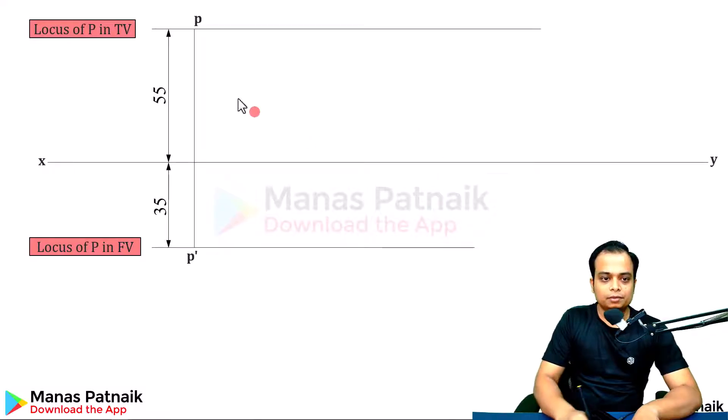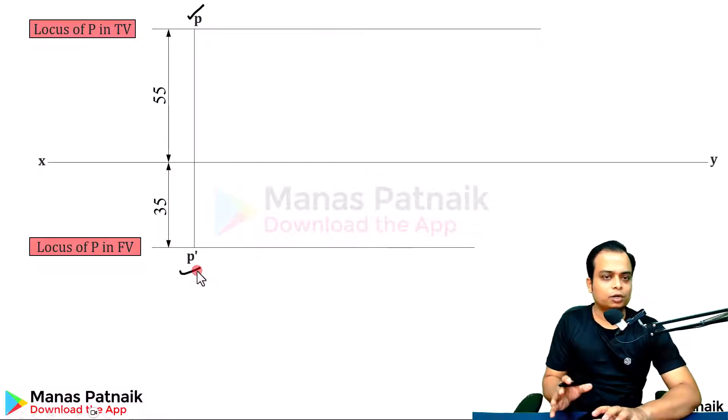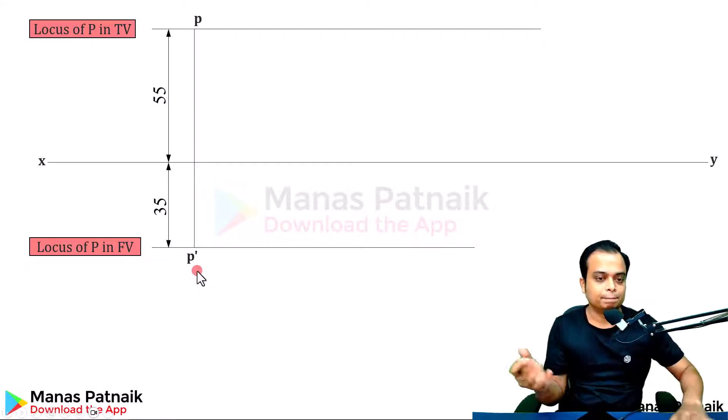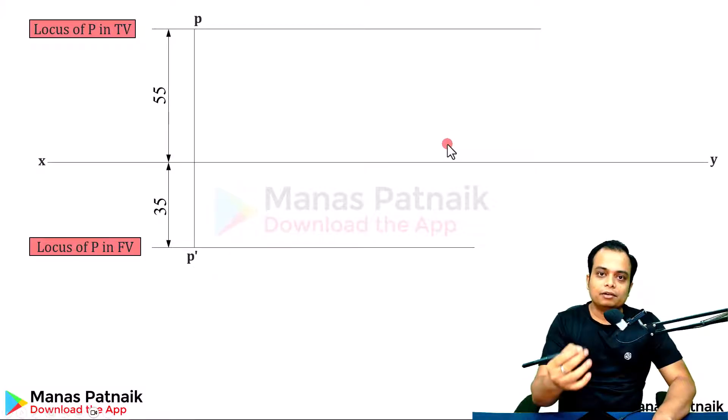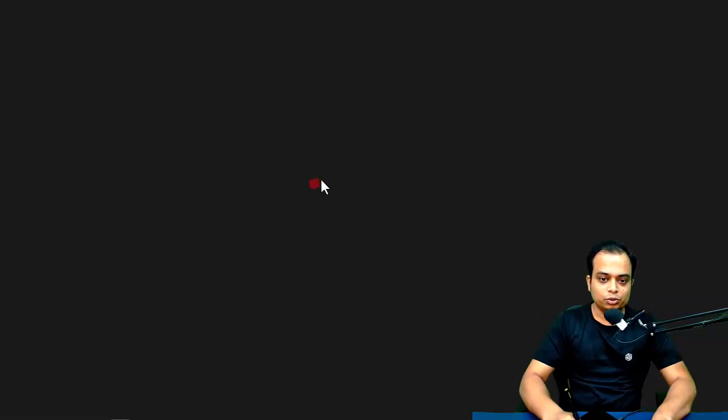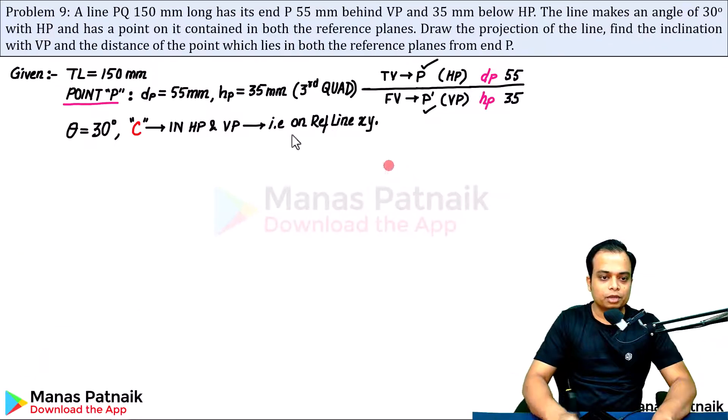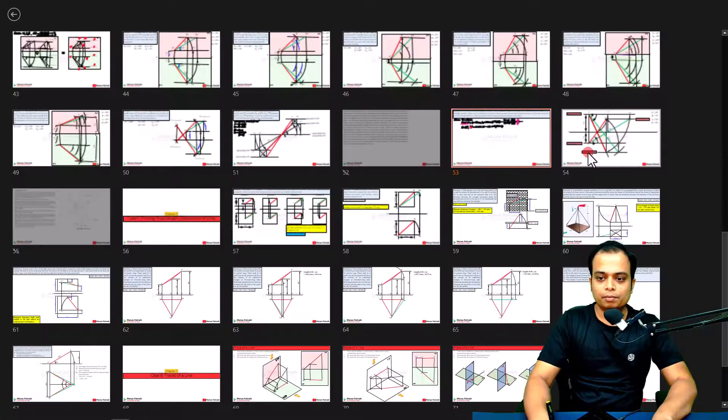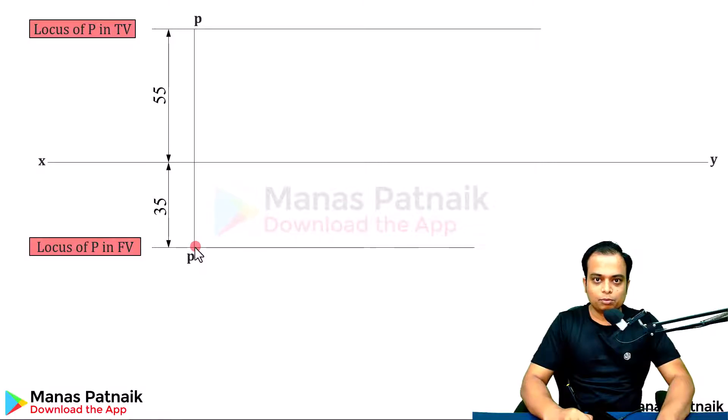Very simple. 55 above, top view. 35 below XY, that's the front view. This is something that you've already learned in the chapter of projection of points. The second thing is, we also have been given the angle theta. Angle theta can be made using this P dash. Theta is equal to 30 degrees.